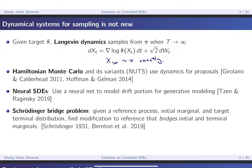Another very famous example is Hamiltonian Monte Carlo and its variants, for example NUTS, which uses Hamiltonian dynamics for proposals in MCMC. There are examples of neural SDEs where you use a neural net to model the drift portion, typically done for generative modeling. This problem is also related to the Schrödinger bridge problem, first conceived by Schrödinger in the 1930s: given a reference process, an initial marginal and a terminal marginal, you want to find a modification to the reference process that bridges the initial and terminal marginals.